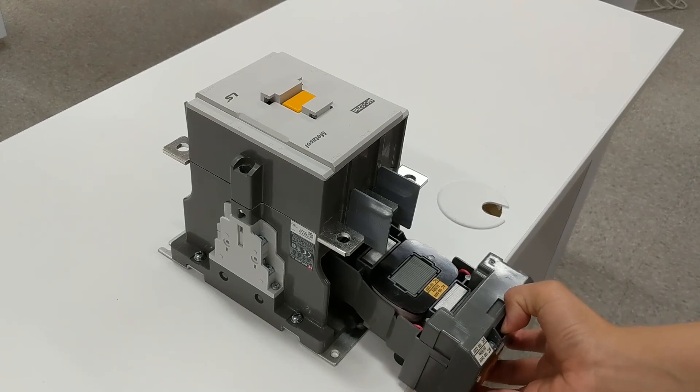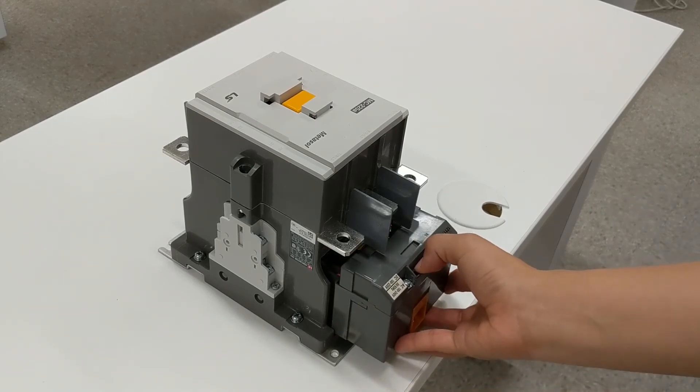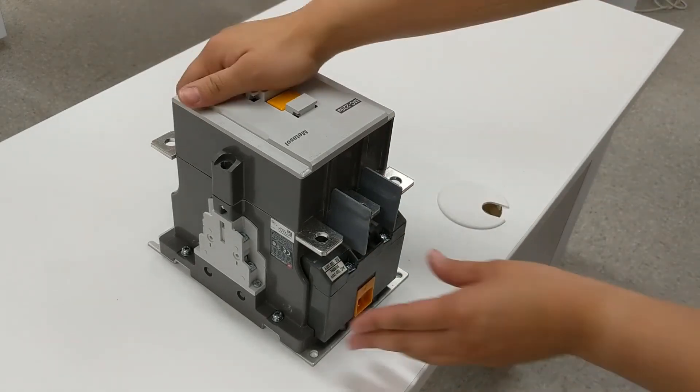To install the new coil, simply slide the replacement coil into the contactor housing and make sure the coil is fully seated.